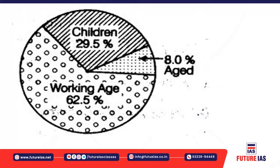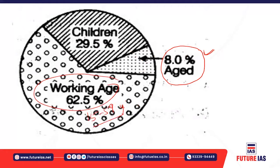In the 2011 census, approximately 8 percent belonged to aged people, the working age group (15–59 years) was around 62.5 percent, and children (0–15 years) corresponded to about 29.5 percent. This is how the age composition of India's population is distributed.